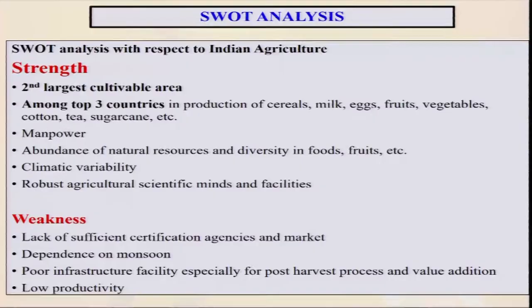To evaluate whether organic farming is feasible for a particular area, we have done a SWOT analysis — Strength, Weakness, Opportunity, and Threat. In Indian agriculture, our strengths include having the highest cultivable area after China, and being among the top three countries in production of cereals, milk, eggs, fruits, and vegetables. If we go for organic with these crops, there are lots of export opportunities. We also have very good, skilled, and relatively low-cost manpower — one of the cheapest manpower pools in the world. If we train them in organic production skills, our organic production and the total value of organic produce can be enhanced substantially.